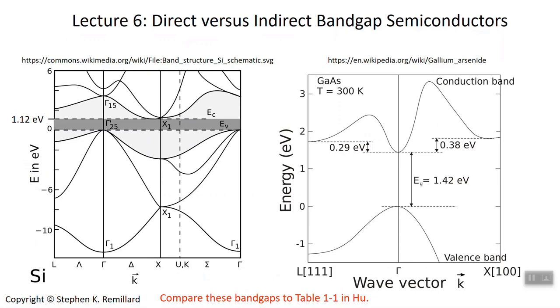We can continue our discussion of direct and indirect bandgap semiconductors by focusing on two materials, silicon and gallium arsenide. We have the band structures shown here, which are three-dimensional plots taken down to two dimensions. The vertical axis is the energy and the band edges of each band are shown. The horizontal axis is K space, crystal momentum space.